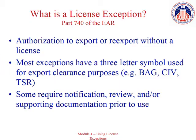What is a license exception? A license exception is an authorization that allows you to export under stated conditions items subject to the Export Administration Regulations that would otherwise require a license. There are 16 license exceptions, all of which are identified by a three-letter symbol such as BAG, CIV, or TSR. These symbols are used for export clearance purposes.